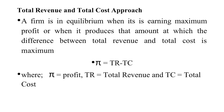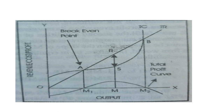The first approach is the total revenue and total cost approach. A firm is in equilibrium when it is earning maximum profit — that is, when it produces the output at which the difference between total revenue (TR) and total cost (TC) is maximum. When TR minus TC is maximized, this is the profit, and this is known as the total revenue and total cost approach. On the graph, the X-axis shows output and the Y-axis shows revenue and profit.